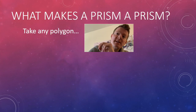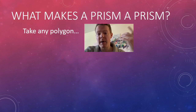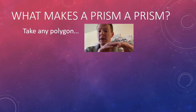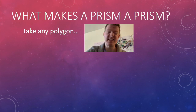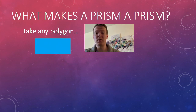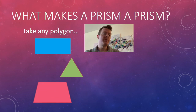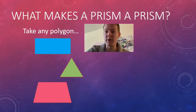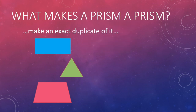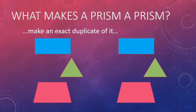First, you're going to take any polygon. Remember, a polygon is a closed figure with straight sides. So we can take a rectangle, a triangle, and even a trapezoid. You really can take any polygon — these are the three we'll use for our examples. Now you want to make an exact duplicate of each one, so now you have exact copies of that original polygon.